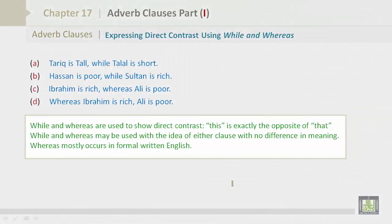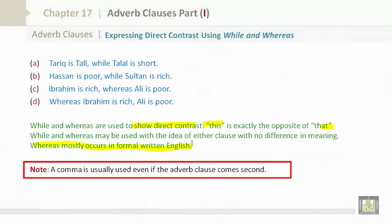While and whereas are used to show direct contrasts. This is exactly the opposite of that. While and whereas may be used with the idea of either clause with no difference in meaning. Whereas mostly occurs in formal, written English. A comma is usually used even if the adverb clause comes second.